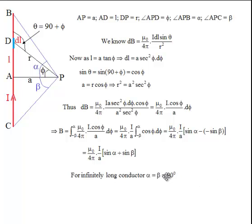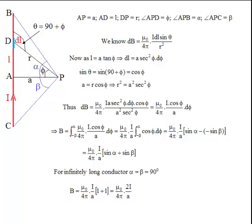Substituting α and β as 90 degrees: B = (μ₀I/4πa)(sin 90 + sin 90) = (μ₀I/4πa)(2). For an infinitely long conductor, this expression becomes (μ₀/4π)(2I/a). We don't simplify 2 and 4 in this expression.